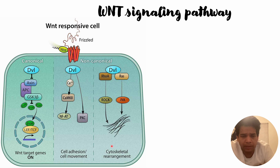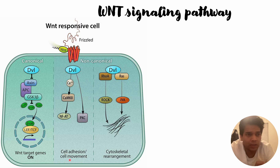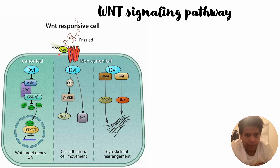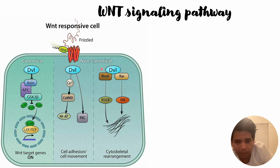The other non-canonical pathway is related to cytoskeletal rearrangement and cell movement, because cell movement requires a change in the phenotype structure of the cells. This change in phenotype structure is promoted by cytoskeletal rearrangement, which is also triggered by the non-canonical WNT response. When WNT receptors get triggered, downstream signaling goes towards the JNK pathway.